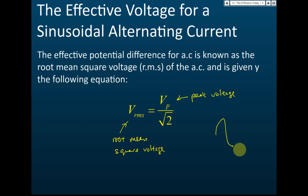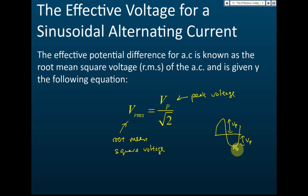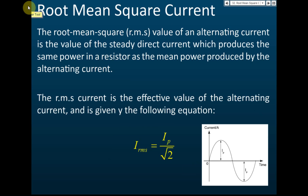The peak voltage is measured from the center to the maximum, or from the center to the minimum. We use the formula V_rms = Vp / √2 for calculations. Similarly, the effective current is called the root mean square current, with the formula I_rms = Ip / √2.